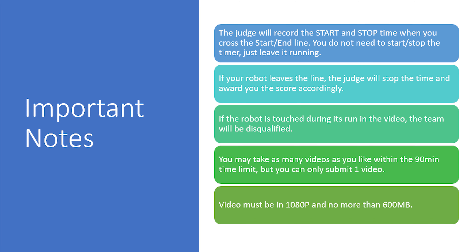Here are some important things to note. The judge will record the start and stop time when you cross the start or end line. You do not need to start and stop the timer — just leave it running in the background. If your robot leaves the line before crossing the end line, the judge will stop the time and award you the score accordingly. If the robot is touched between the start and stop in the video, the team will be disqualified.